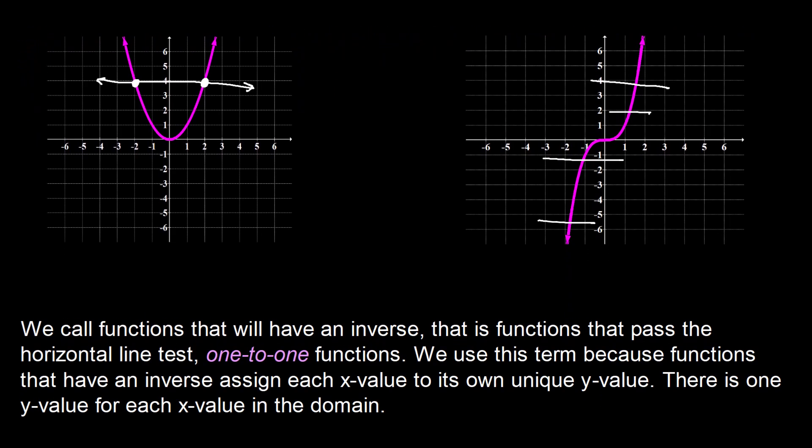So this graph here, our first graph that we looked at, this fails the horizontal line test. So we would say no inverse function. But this one over here, our second graph, our x cubed, this one passes so we will say this one has an inverse function.